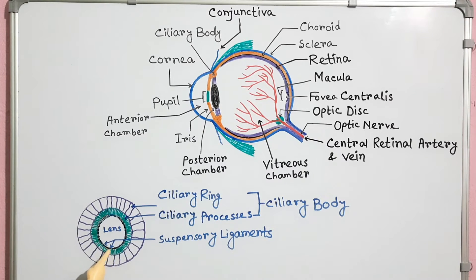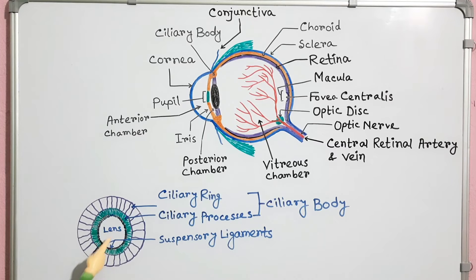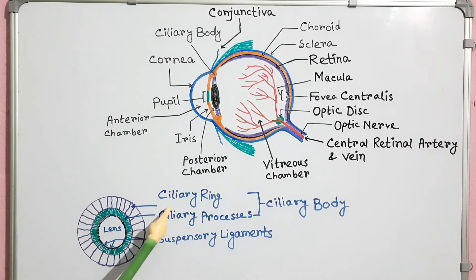The ciliary ring and the base of the ciliary processes contain smooth muscle called ciliary muscles. These are suspensory ligaments. They attach the ciliary ring and processes to the lens of the eye. The contraction of the ciliary muscles can change the shape of the lens. The ciliary process also produces aqueous humor.